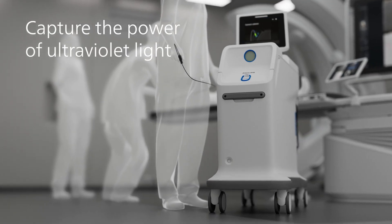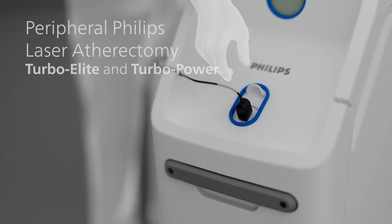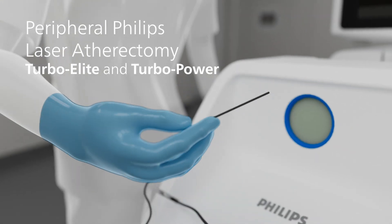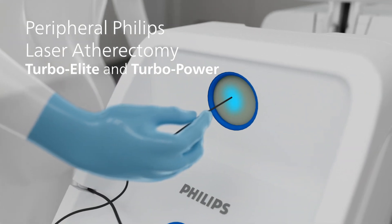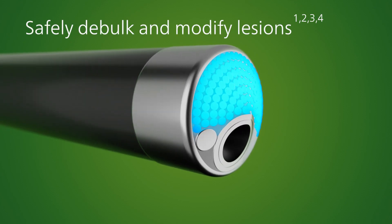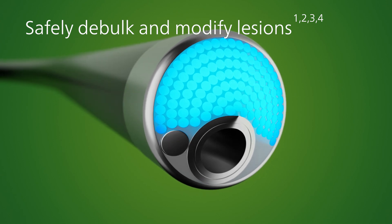Capture the power of ultraviolet light to debulk the most challenging occlusions and restenosis. Peripheral Philips Laser Atherectomy, comprised of TurboElite and TurboPower catheters, is a non-mechanical excimer laser catheter that can debulk and modify plaque in an array of morphologies, including in-stent restenosis.